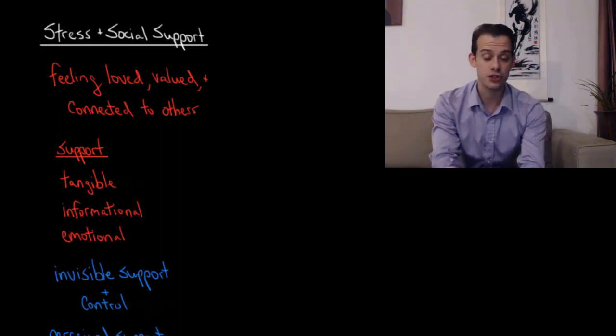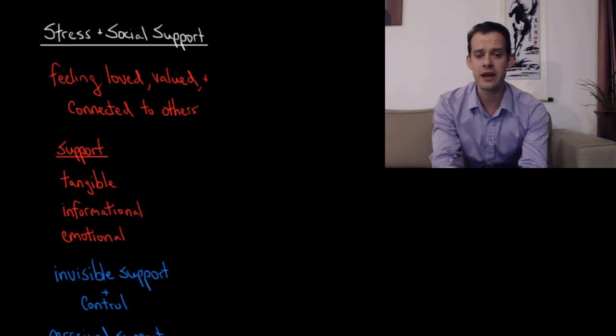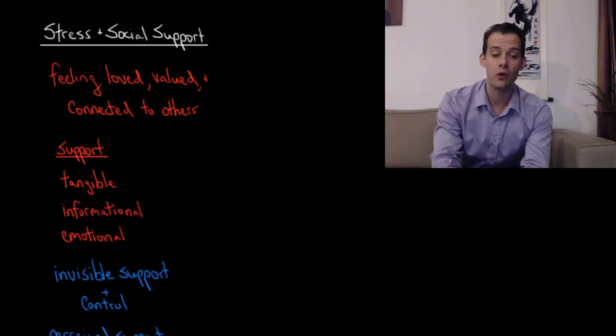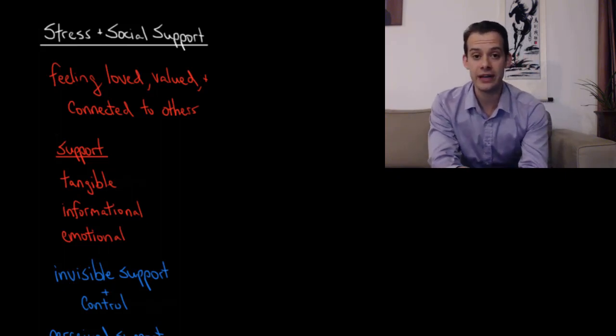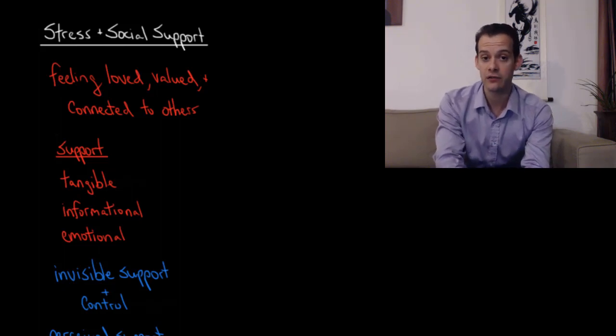So social support refers to feeling loved, feeling valued, feeling that you're connected to other people. And this support can come in a number of different ways. It can come in the form of tangible support. So this would be someone cooking a meal for you or providing you with money if you need it, or providing physical assistance for a task that you can't complete on your own.